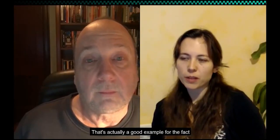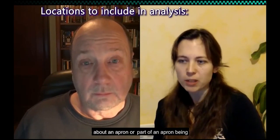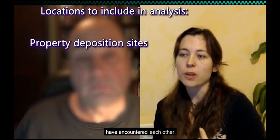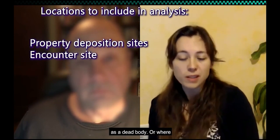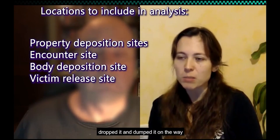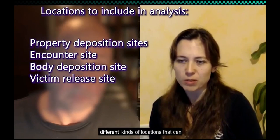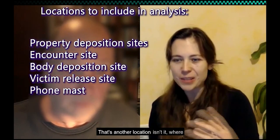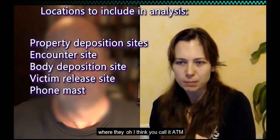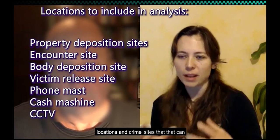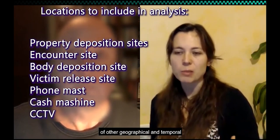That's a good example of the fact that it's not just crime sites that form data points in a geographical analysis — it's also property deposition sites, where the victim and offender might have encountered each other, where a body might be deposited, where the offender may have taken something from the victim and dropped it. And nowadays, where their mobile phone might have pinged off a mast, where they used a cash machine or ATM, or where they were seen on CCTV — so it's not only crime locations but a lot of other geographical and temporal information. That's right — if we can place the offender at a location physically, we may be able to use that point. We've done it with telephone booths, with cell phone towers in kidnapping cases.